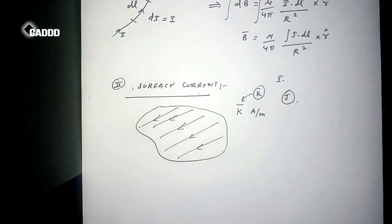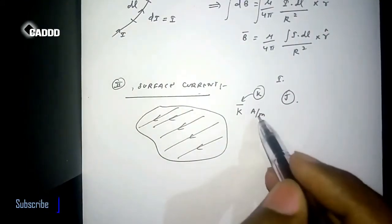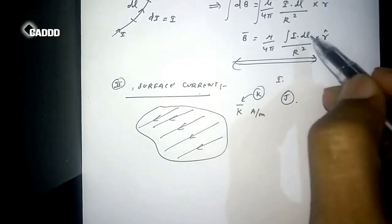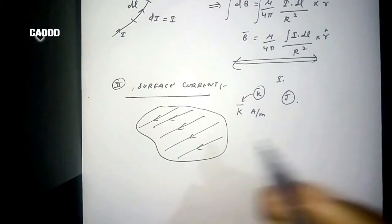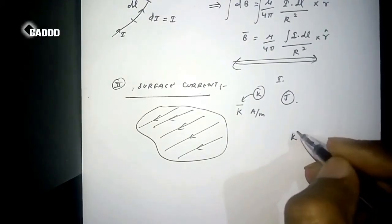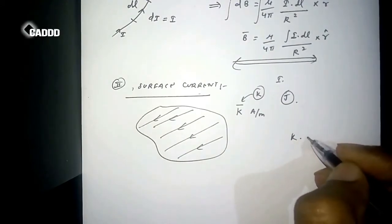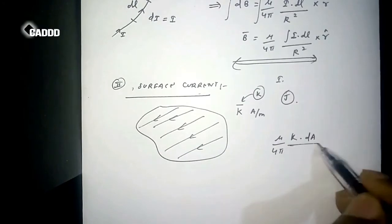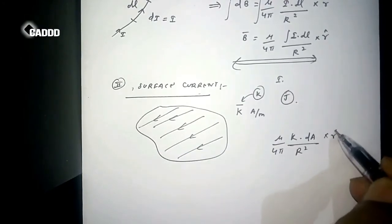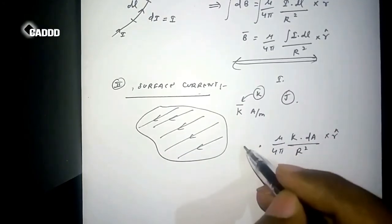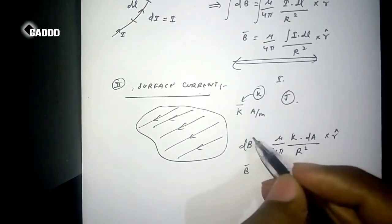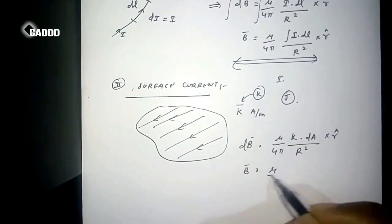The unit of K is amperes per meter. Here we wrote I dot dL, but here we have to write K dot dA. Rest of the things is same, like mu by 4 pi, by r square cross r cap. This is equal to dB.